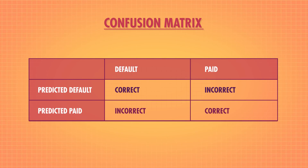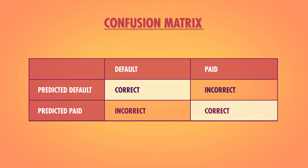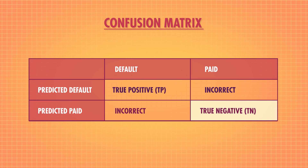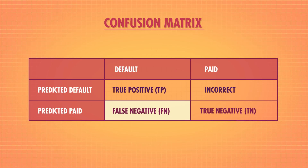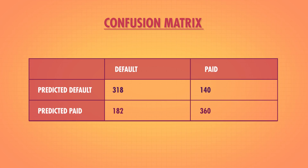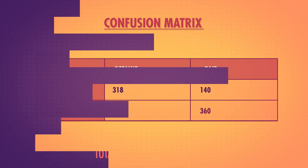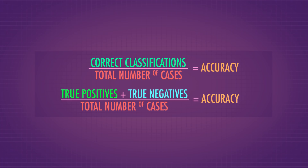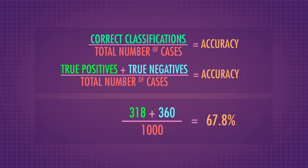We can compare predictions with real outcomes using what's called a confusion matrix — a chart that tells us what actually happened and what the model predicted. The diagonals of this matrix are the times the model got it right. Cases where the model correctly predicted default are called true positives; cases where it correctly predicted payback are called true negatives. Cases where the model was wrong are called false negatives if it thought they would not default, and false positives if it thought they would. Accuracy is the total number of correct classifications divided by the total number of cases.